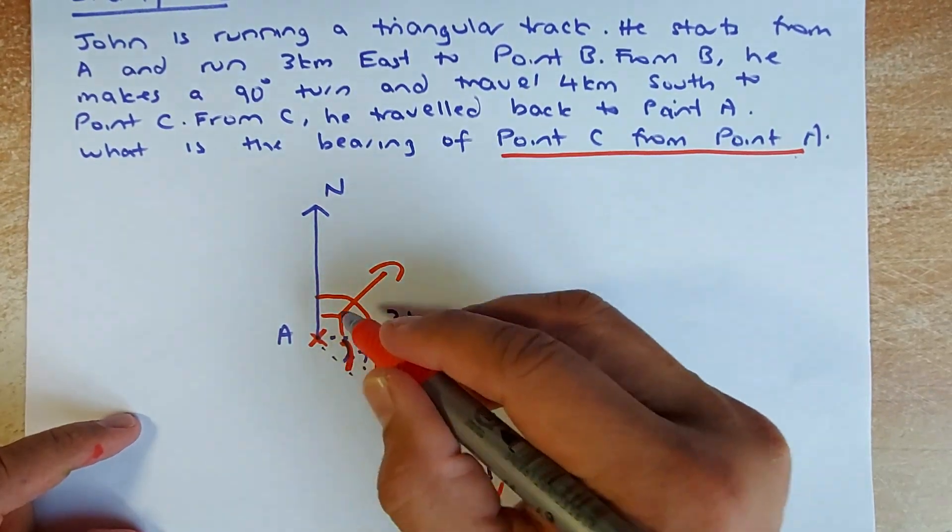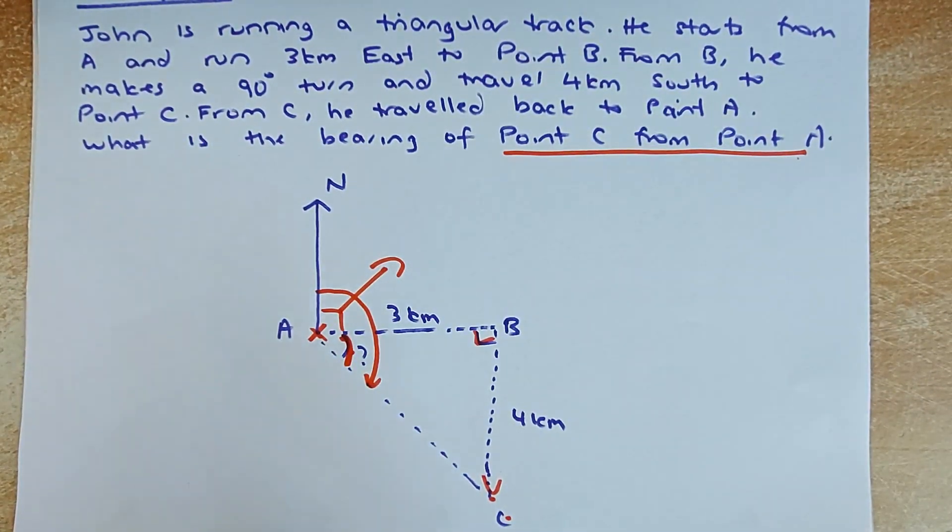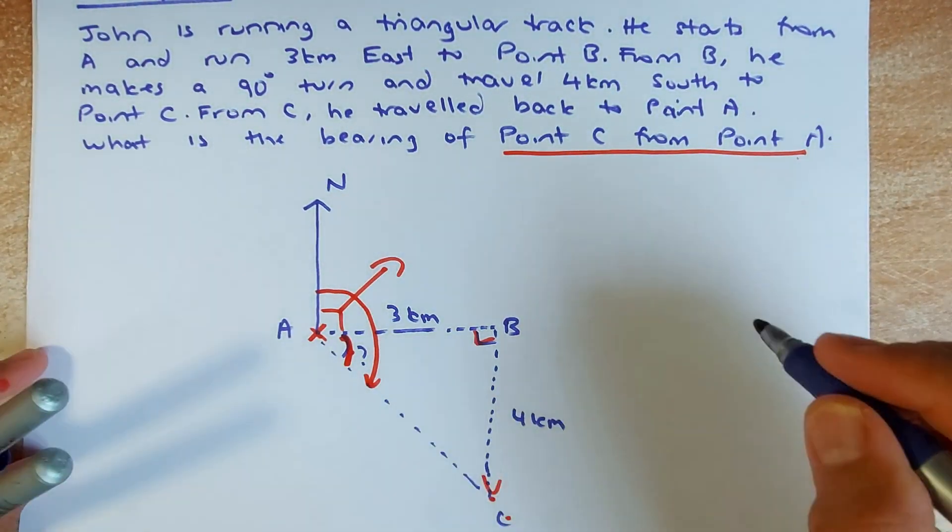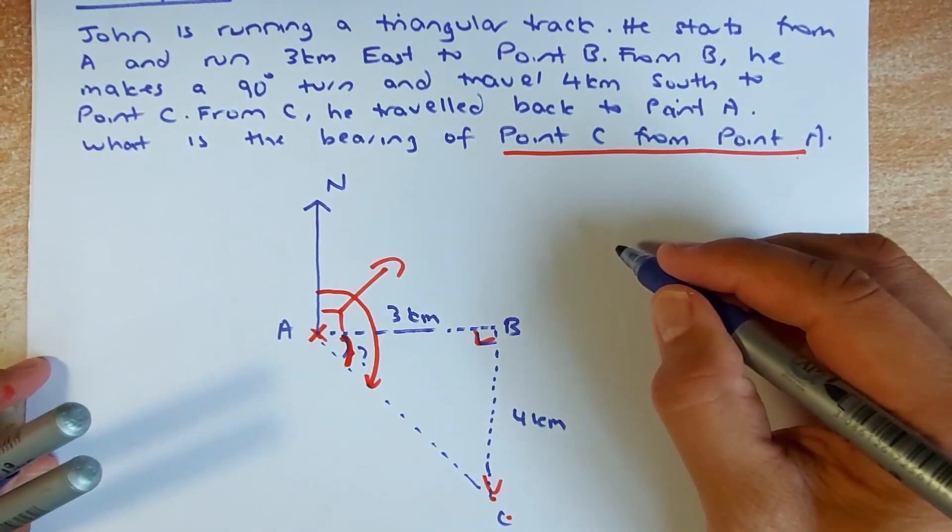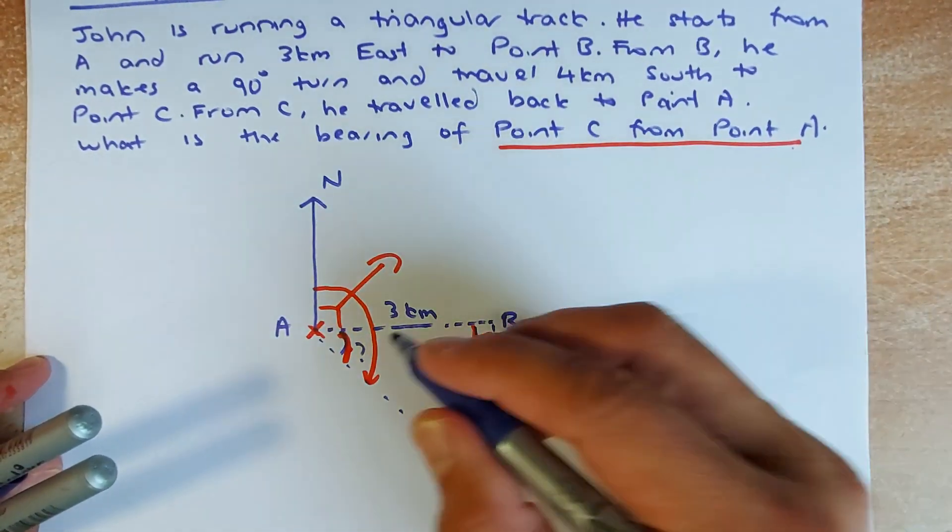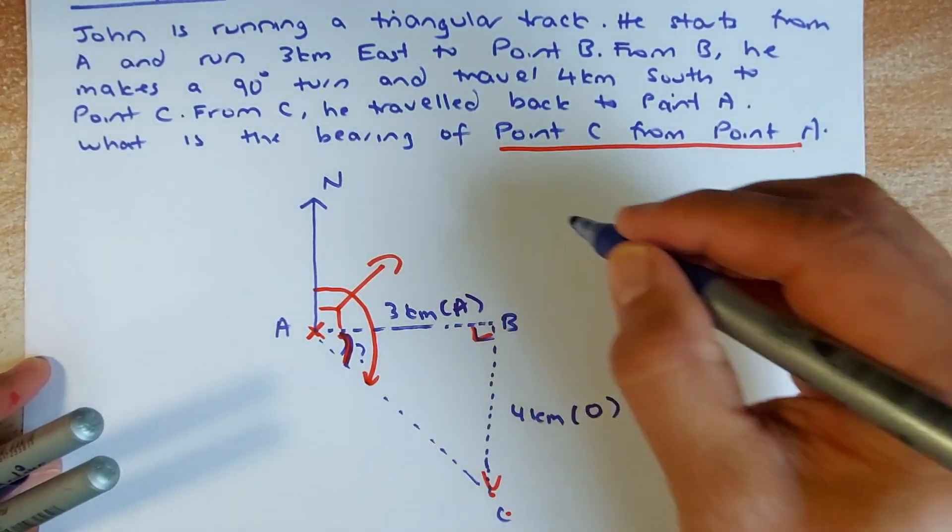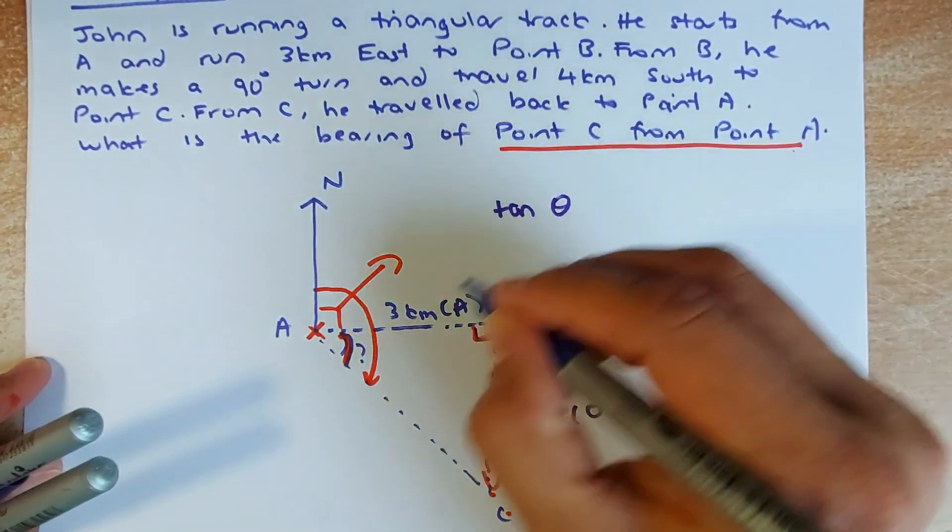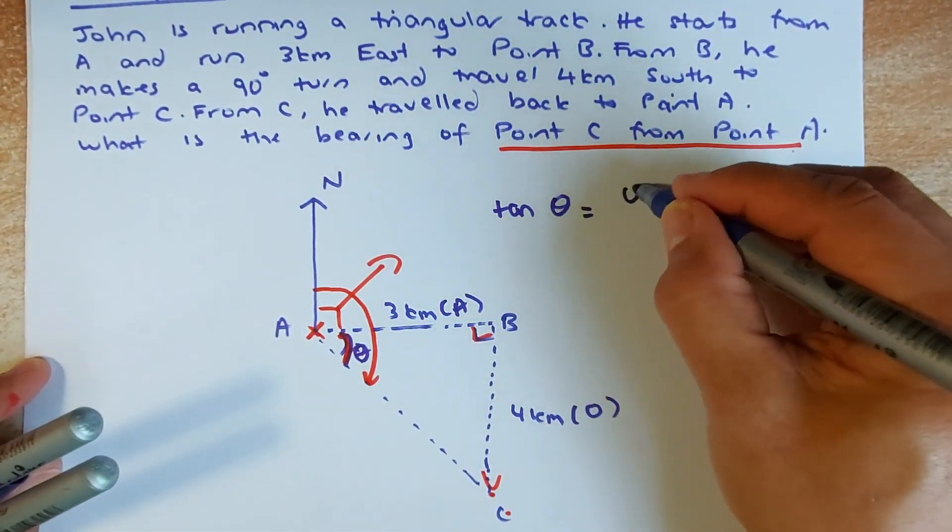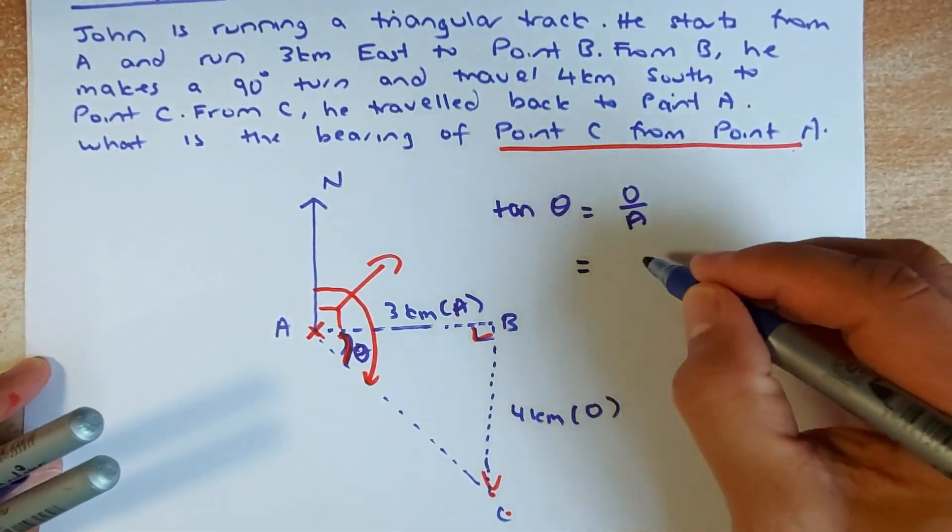If we can get this angle we can add to 90 degrees and that will be the bearing. To do that we have to use some trigonometric ratio. So what we do first we are going to use SOHCAHTOA or trig ratio. In this case that angle is opposite, that is adjacent.